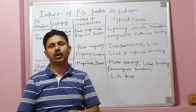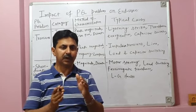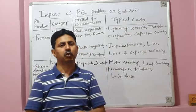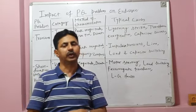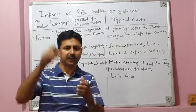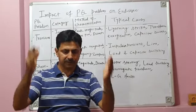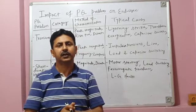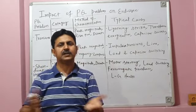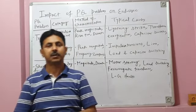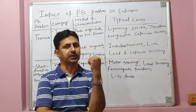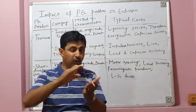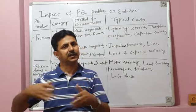Sustained interruption means interruption for a long period due to permanent faults — when the line trips, there is sustained interruption resulting in complete blackout, loss of production, and loss of revenue. This covers the third type of power quality problem: long duration voltage variations with three categories — under voltage, over voltage, and sustained interruption.